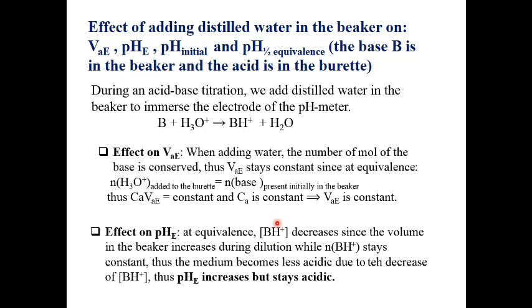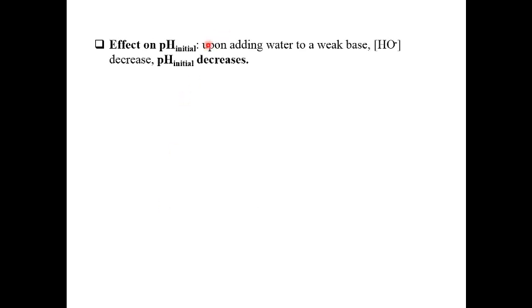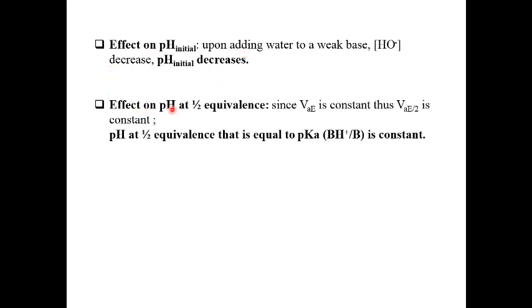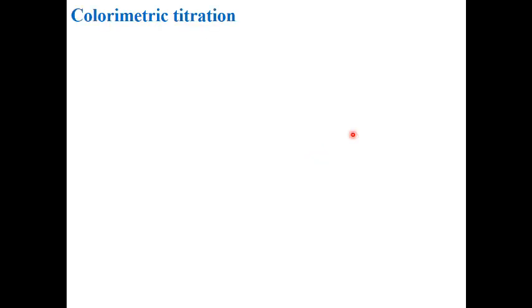What about the effect of adding water on initial pH? Initially we have the weak base in the beaker, so the concentration of HO⁻ will decrease and the pH will decrease. As for pH at half equivalence — no effect, for the same reason: the volume at equivalence is constant, so the volume at half equivalence is constant. The pH at half equivalence still equals pKa of the couple involved.